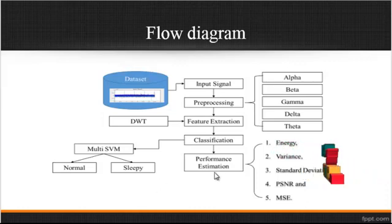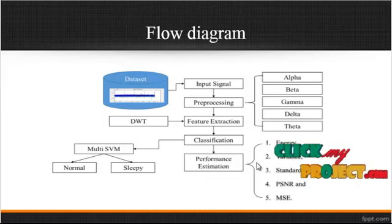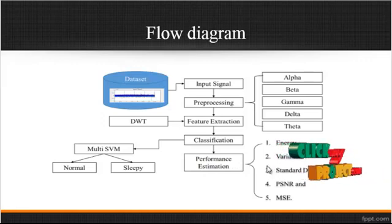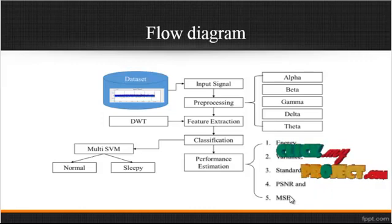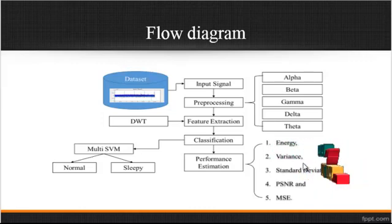After that, the performance will be estimated using performance metrics like energy, variance, standard deviation, PSNR, and MSE. By using these parameters, we can justify whether our process is efficient or not.